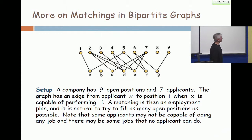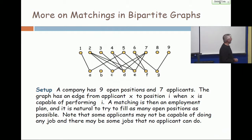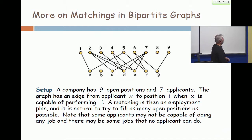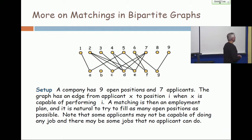More on matchings in bipartite graphs. I want to talk about a particular model: I have some employees, or potential employees, candidates for positions. They are the letters A through G, and I have open positions one through nine.